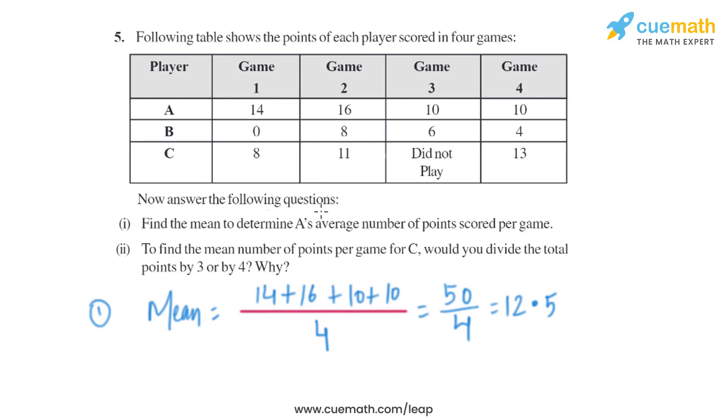That is the mean of A, or we can say A's average number of points scored per game is 12.5. Now let's move on to the second part. It says to find the mean for C, will we divide the total by 3 or by 4? As we can see there are only three terms, three values that are given, so we will divide the total value by 3, not by 4, to find the mean for C.